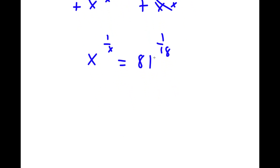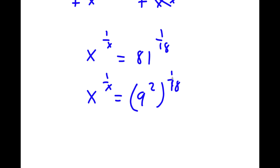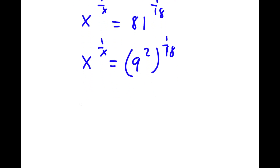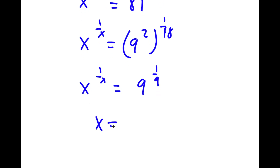Now, 81 is the same thing as 9 squared. So I have x to the power of 1 over x is equal to 9 squared to the power of 1 over 18. Since 2 times 1 over 18 equals 1 over 9, I have x to the power of 1 over x is equal to 9 to the power of 1 over 9, meaning x is equal to 9.